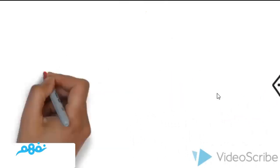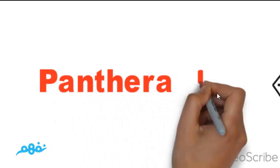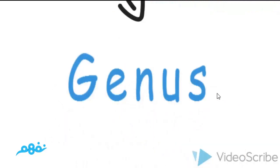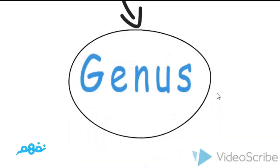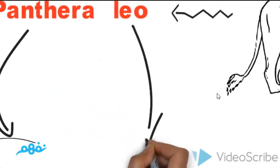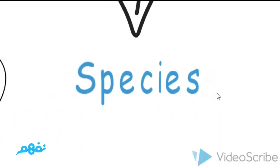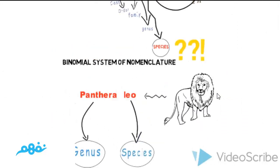And it's called Panthera leo. And this Panthera, first word, it's considered as a genus. And the second word called leo, we can consider it as a species.